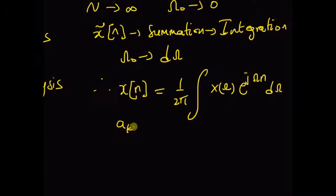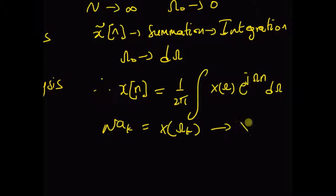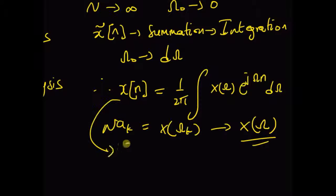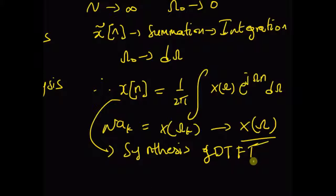Thus we have the synthesis equation of the discrete time Fourier transform. By exploiting the periodic structure and defining an envelope on the coefficients a_k, and finally decreasing the width of the rectangles while increasing the number of values to infinity, we have derived the discrete time Fourier transform from discrete time Fourier series. Thanks for watching.